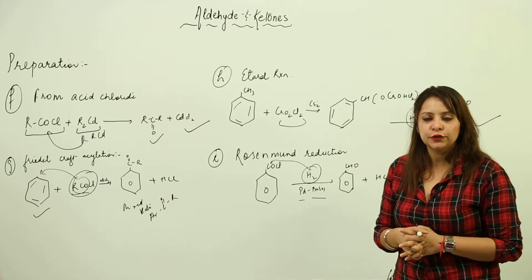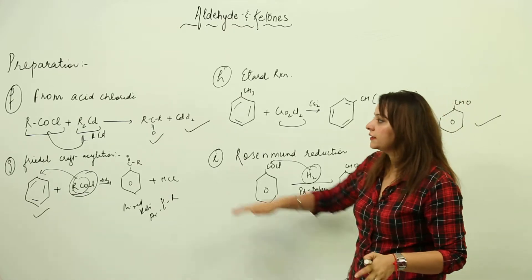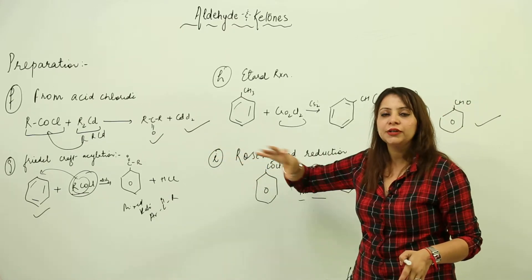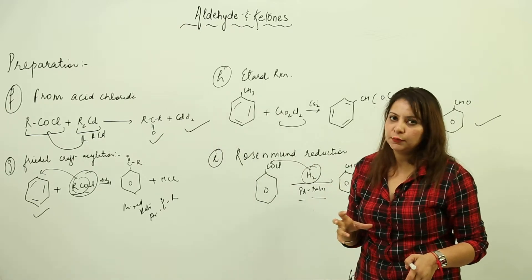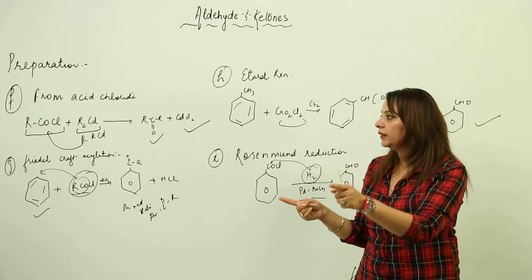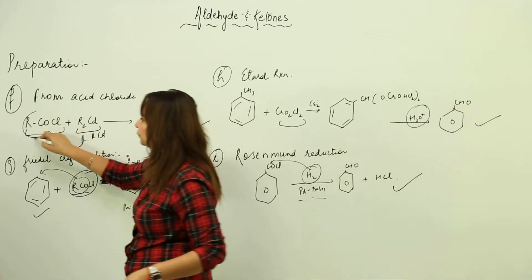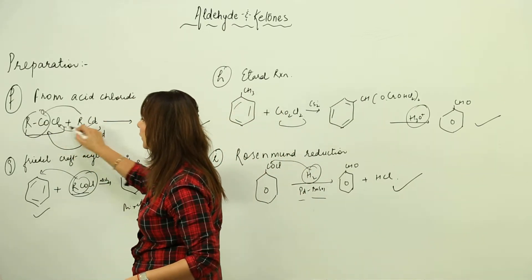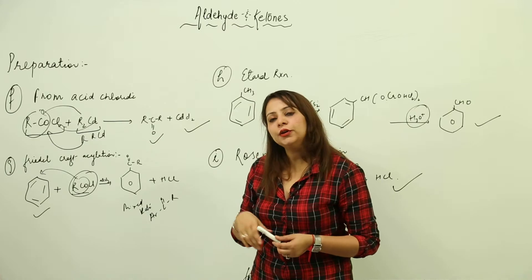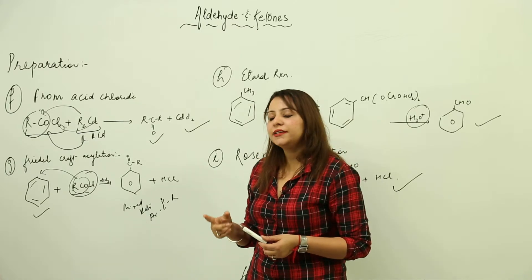These are the complete preparations of aldehydes and ketones. First is acid chloride - we react with dialkyl cadmium, R reacts with this group and we get cadmium chloride. Friedel-Crafts acylation - you react with COCl group to prepare mixed ketones.